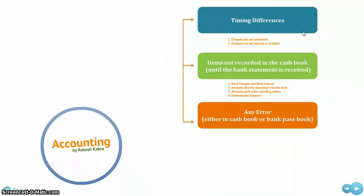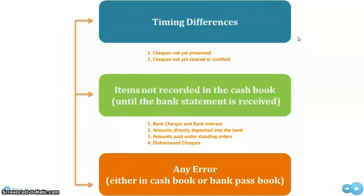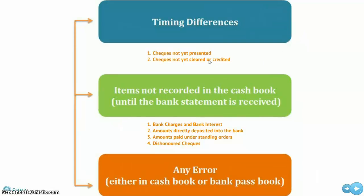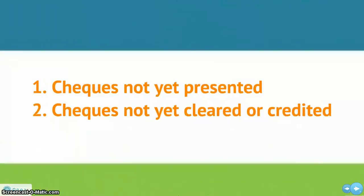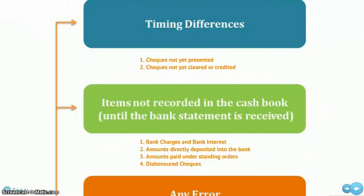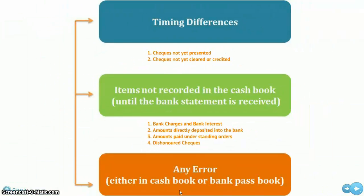The first is due to timing difference of recording transactions in both the books. For example, checks issued but not yet presented for payment, or checks deposited into the bank but not yet cleared or credited into the bank account.